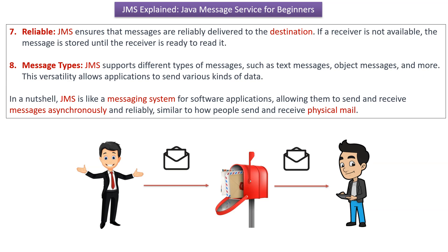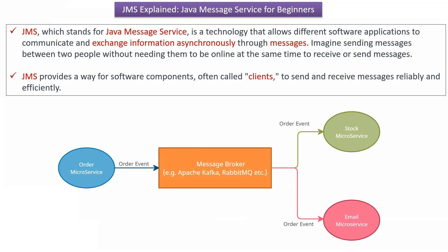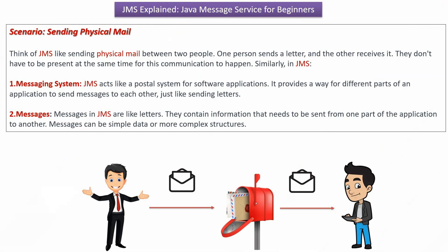JMS supports different types of messages like text messages, object messages, and more, so applications can send various kinds of data. In a nutshell, JMS is like a messaging system for software applications, allowing them to send and receive messages asynchronously and reliably, similar to how people send and receive information.